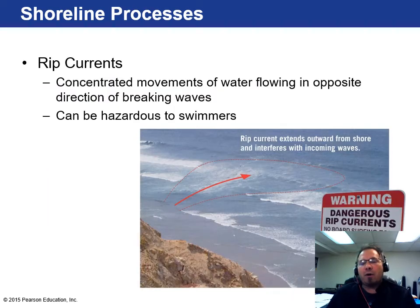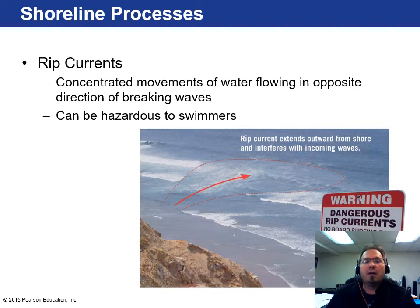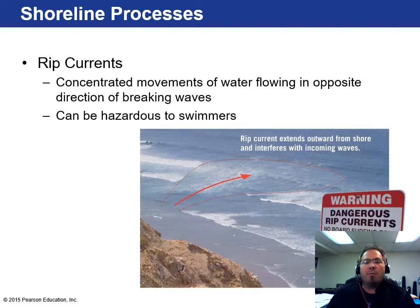Rip currents are dangerous to swimmers and occur in Lake Michigan as well. These are concentrated movements of water flowing in the opposite direction of breaking waves. Due to topographic differences on the shore floor, water flows back out in a narrow channel. If you get caught in one as a swimmer, it literally drags you offshore — if you're not a strong swimmer, you're in serious trouble.